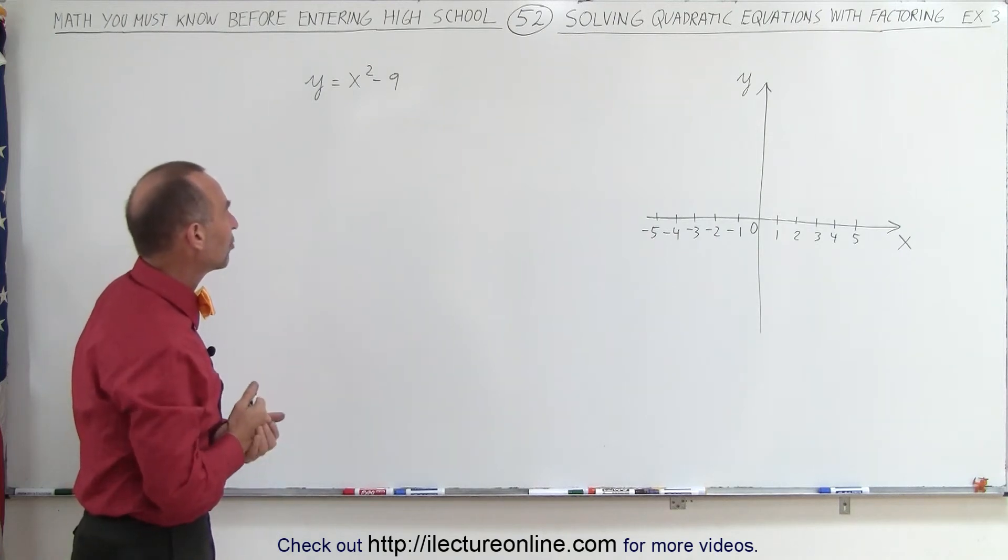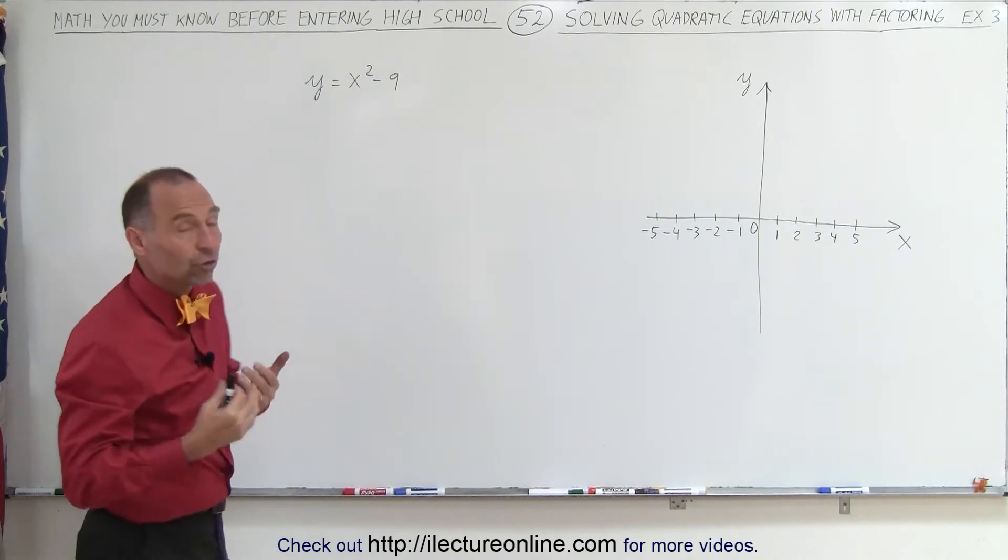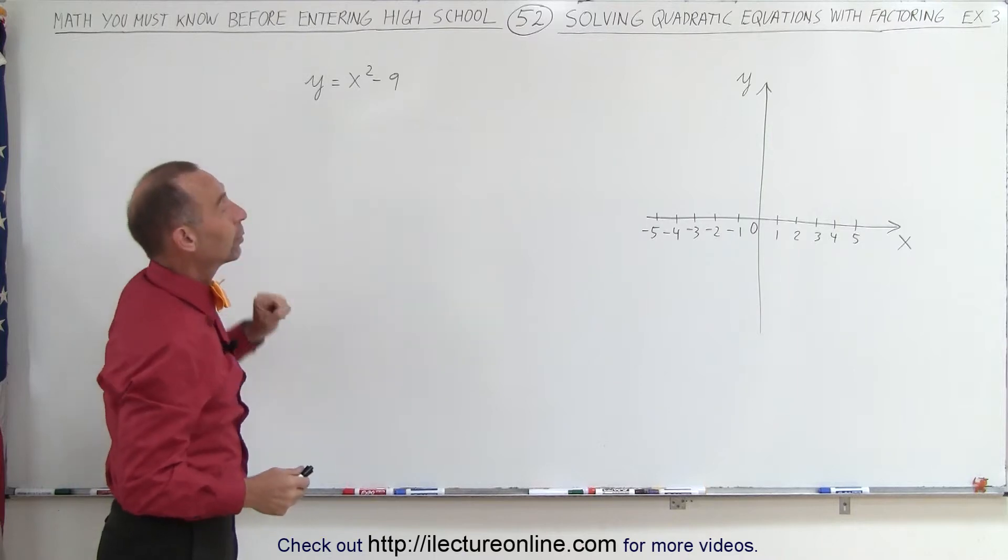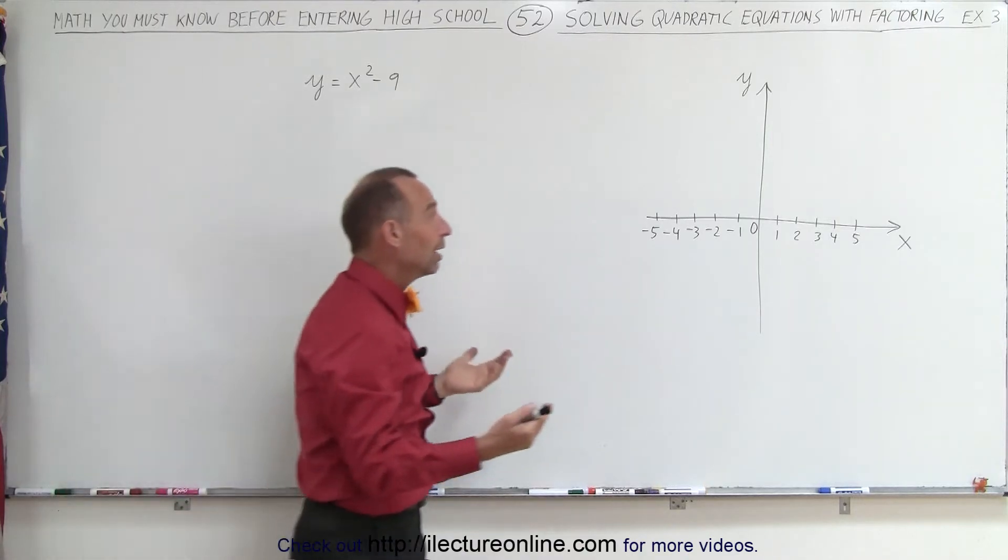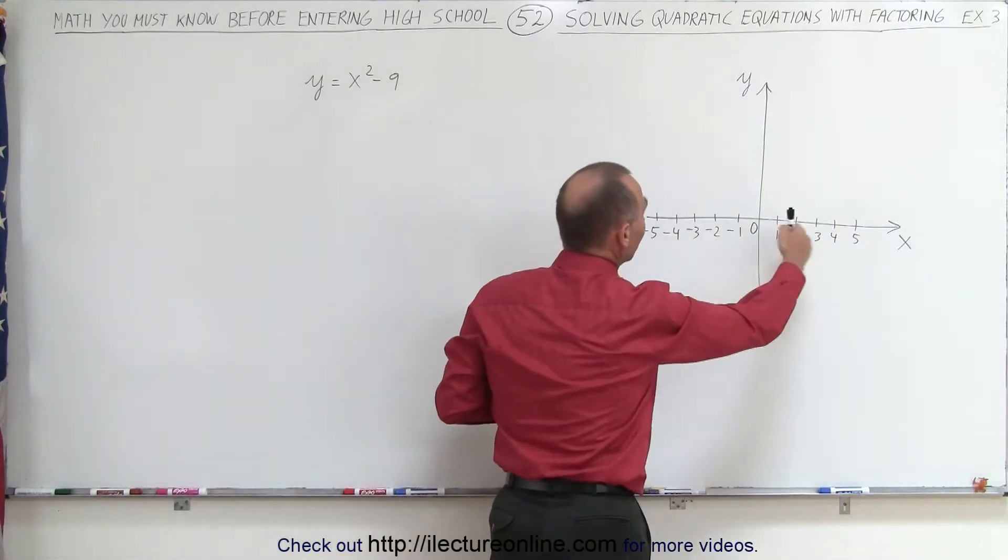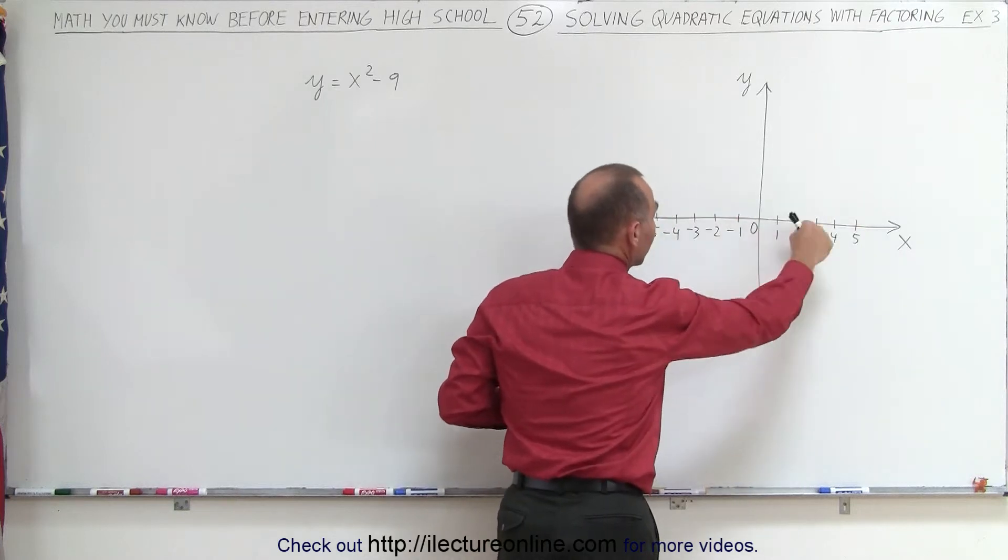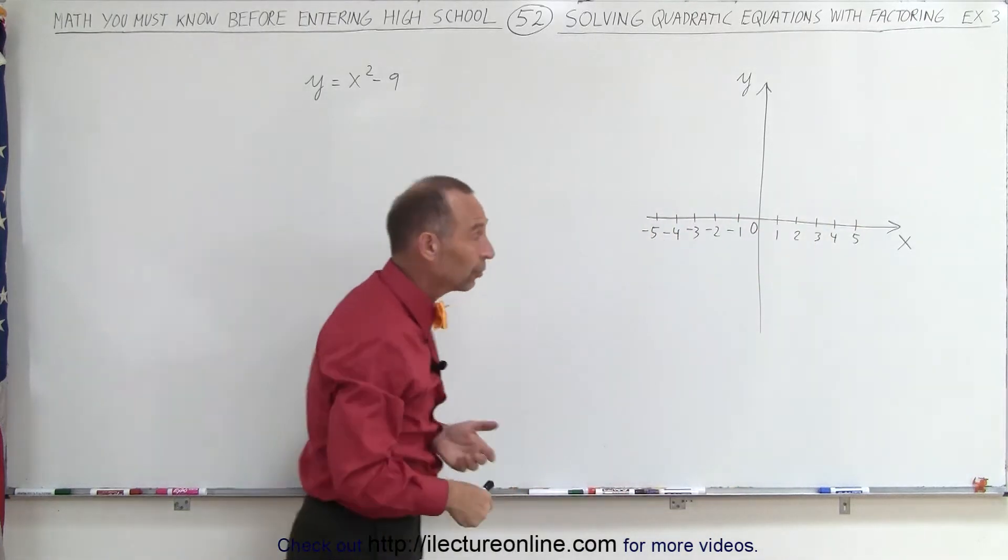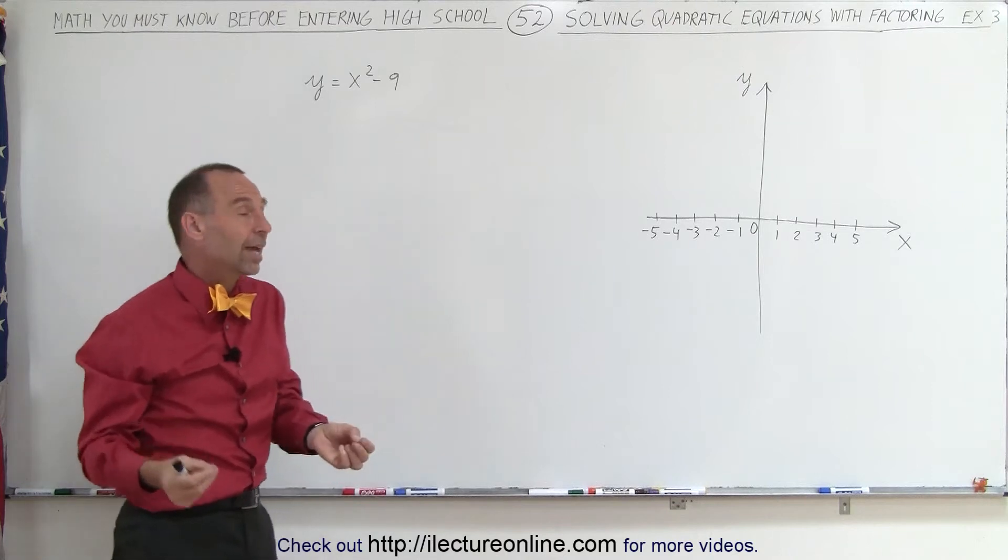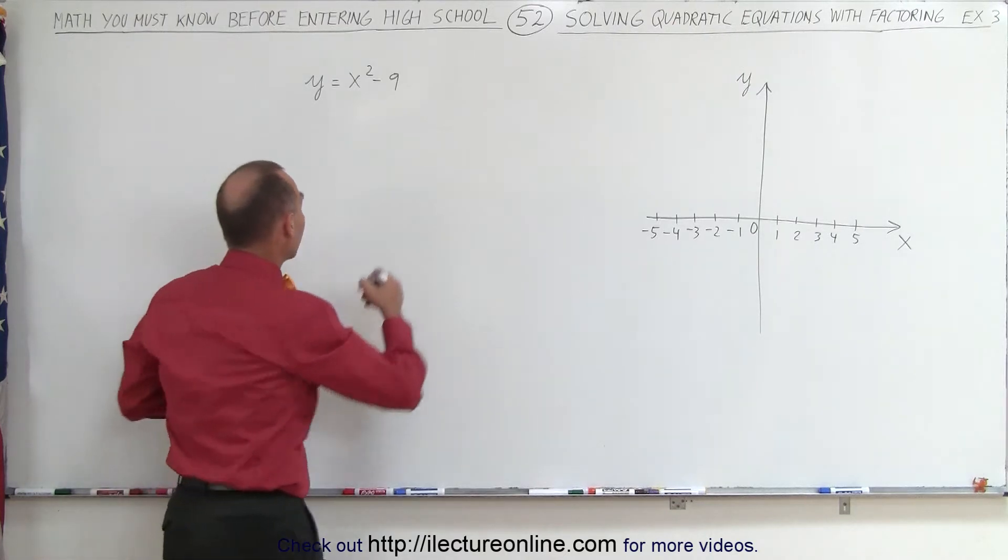So, what kind of equation are we dealing with here? In order to solve it, we have to set y equal to 0. Why is that? Well, whenever something crosses the x-axis, at that point, anywhere along the x-axis, the y-coordinate is equal to 0. So, to find the points where it crosses the x-axis, we need to set y equal to 0.